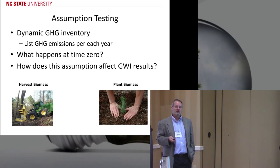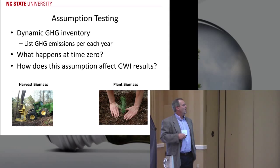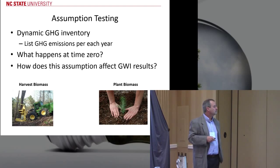In the dynamic greenhouse gas inventory, we list emissions per each year. We also consider what happens at time zero — either planting or cutting — and then look at how this assumption affects the results.